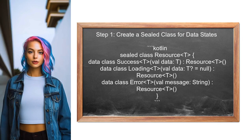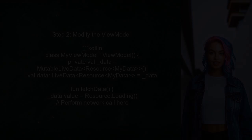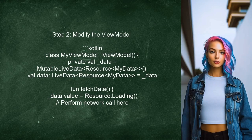To handle error states with live data, start by creating a sealed class to represent the different states of the data. This class will include success, loading, and error states. Next, modify your view model to use this sealed class. This allows the view model to emit different states based on the result of the network call.